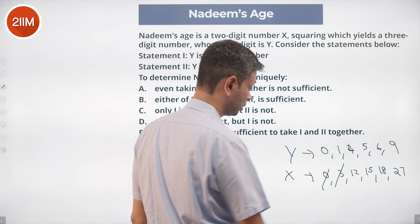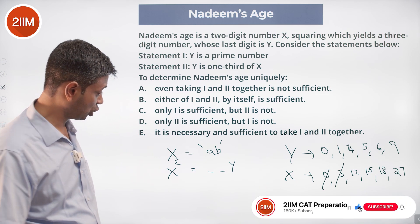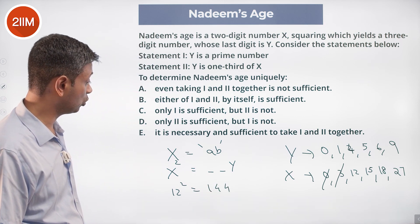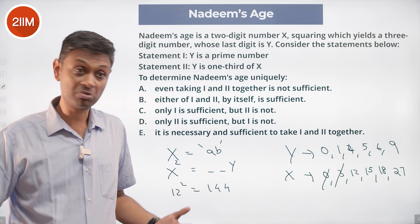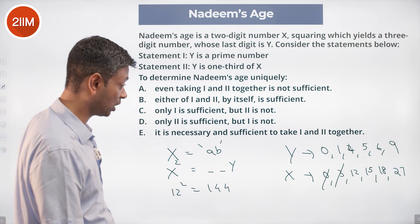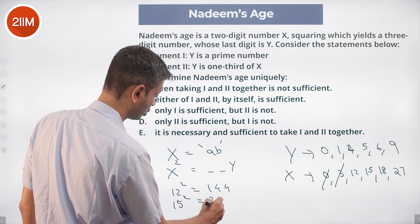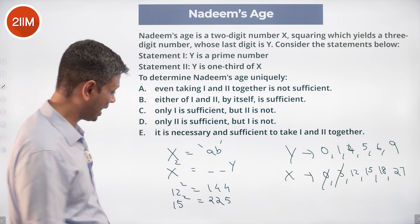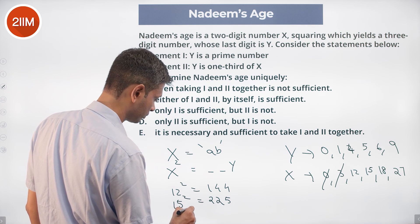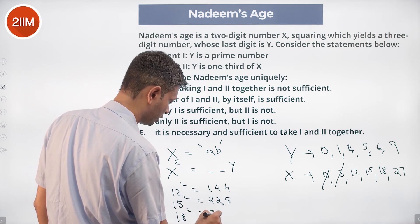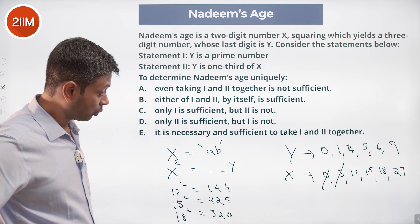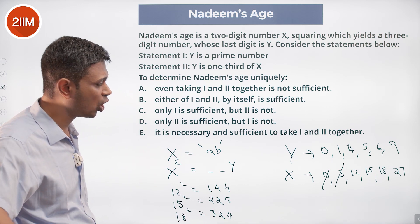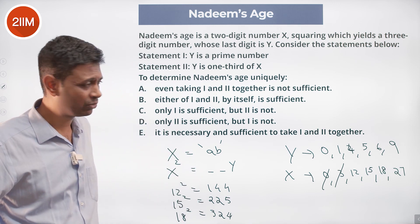Testing candidates: X=12 → 12²=144, Y should be 12/3=4, and 144 ends in 4 — that works! X=15 → 15²=225, Y should be 15/3=5, and 225 ends in 5 — that works! X=18 → 18²=324, Y should be 18/3=6, but 324 ends in 4, not 6 — that does not work, so X=18 is ruled out.